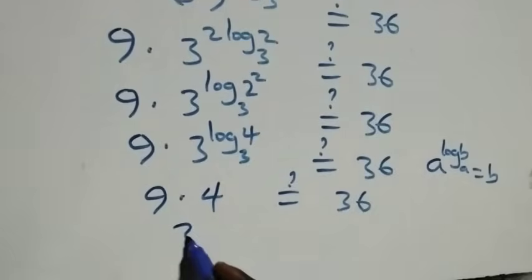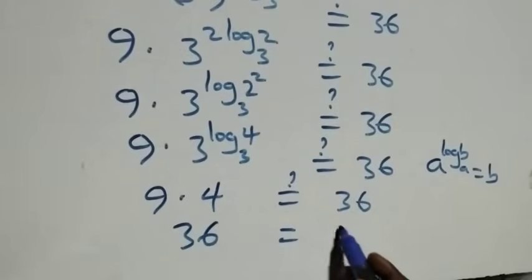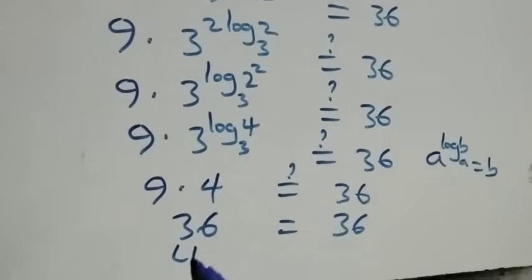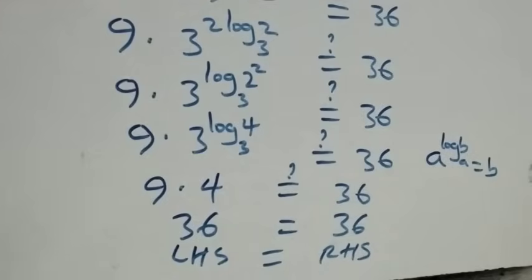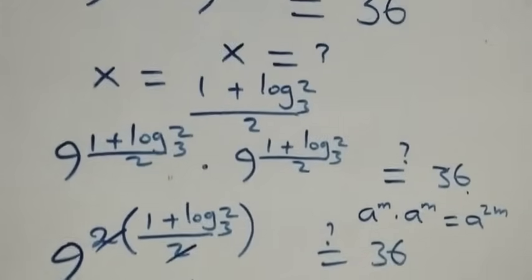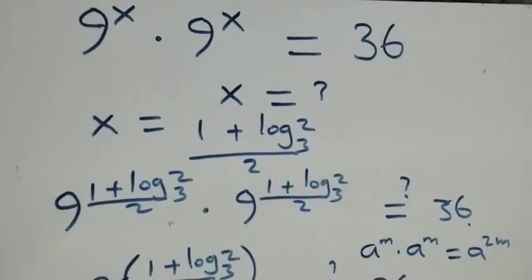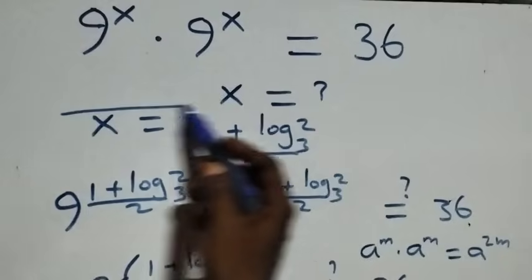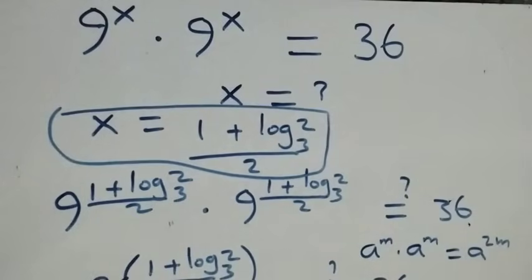Of course, 9 times 4 is 36, which equals 36 on the right hand side. The left hand side equals the right hand side. We conclude that x equals (1 plus log₃2) / 2 satisfies this given problem. Thank you for watching — don't forget to subscribe for more videos, turn the notification bell on, share this video, give it a thumbs up, and put your comments. See you next class, bye for now.